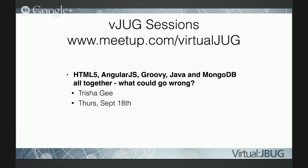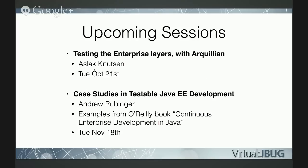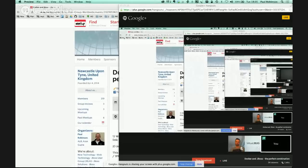There's another virtual meetup group called VJUG — a Java user group. Their next session is on creating an application using HTML5, AngularJS, Groovy, Java, and MongoDB. Trisha Gee will be running a demo where she builds an application in an hour using all those technologies, on Thursday September 18th. I'm just going to stop sharing my screen and kick today's session off.